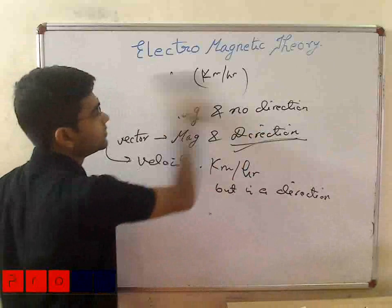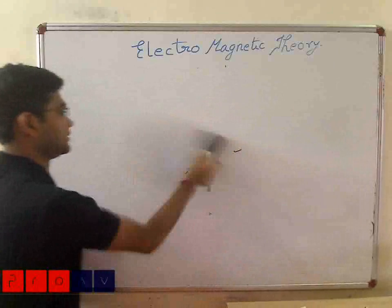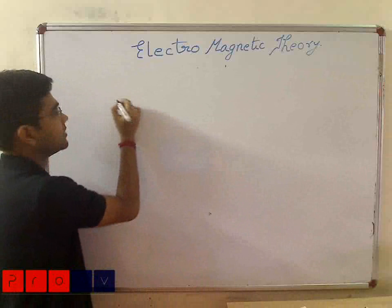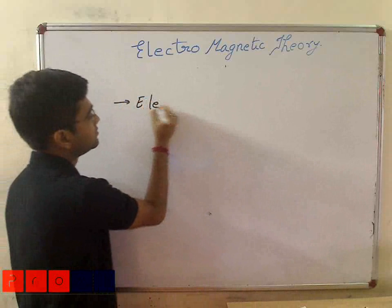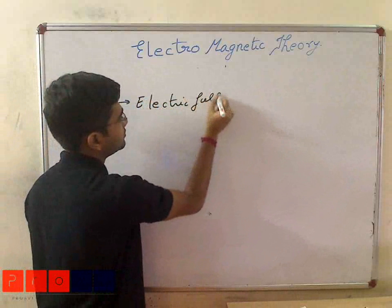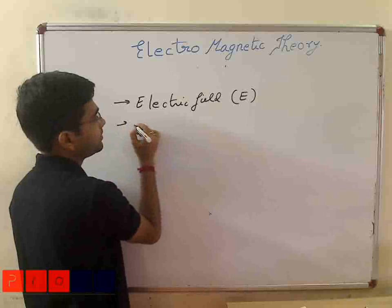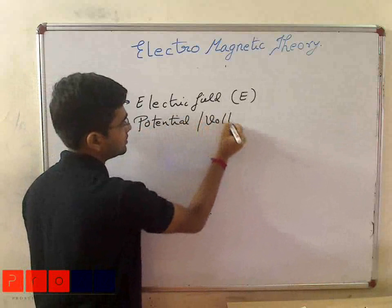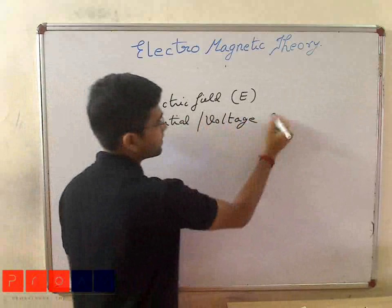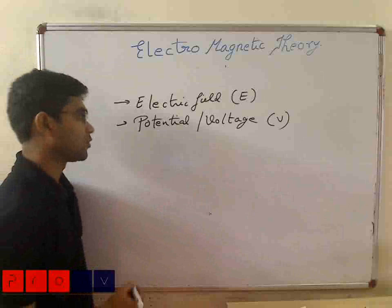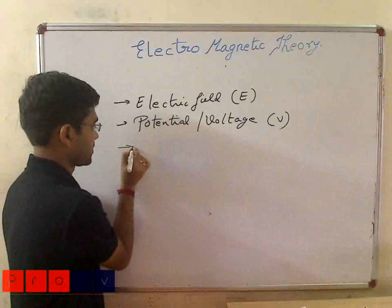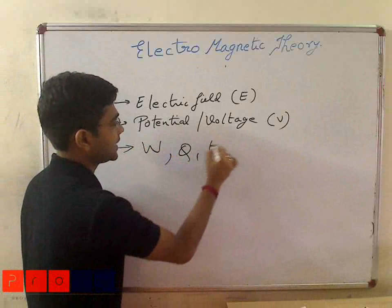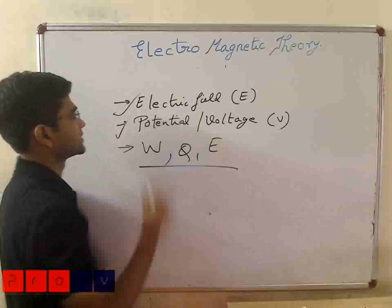Now let us come to the electrostatic group. In electrostatics, we are aware of terms like electric field, denoted by E, and potential or voltage, denoted by V. We also have factors like work done, charge, and energy. These are the most important among these things.